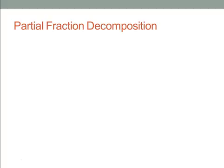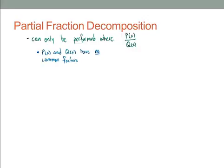Let's take a look at partial fraction decomposition. It can only be performed where I have two functions as a quotient: p(x) divided by q(x). P(x) and q(x) must have no common factors — we're always going to check that. The degree of p must be less than the degree of q; if it's greater, we can simply divide it out.